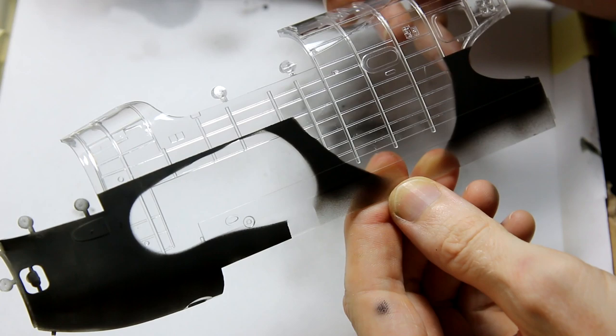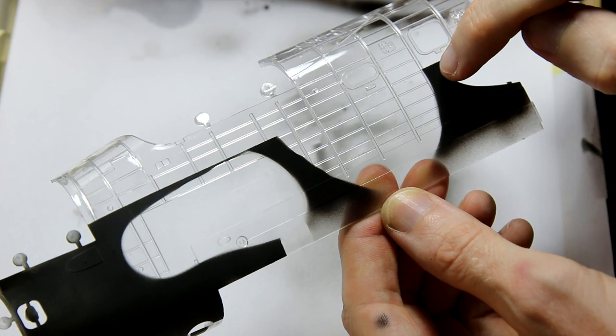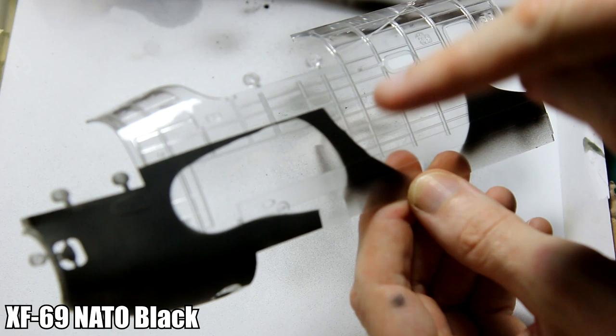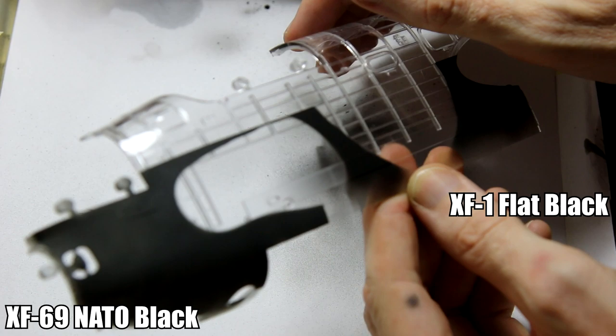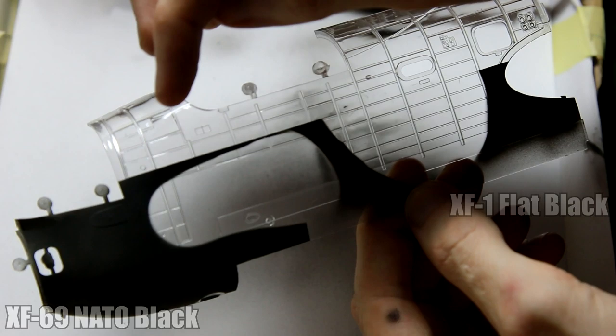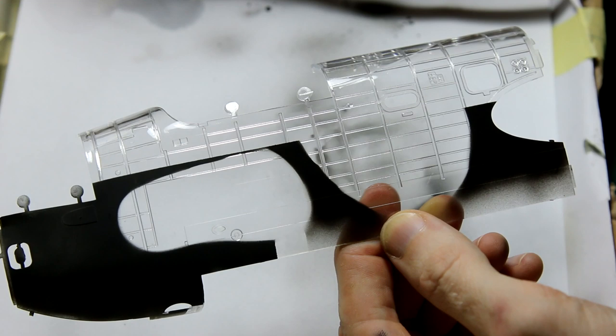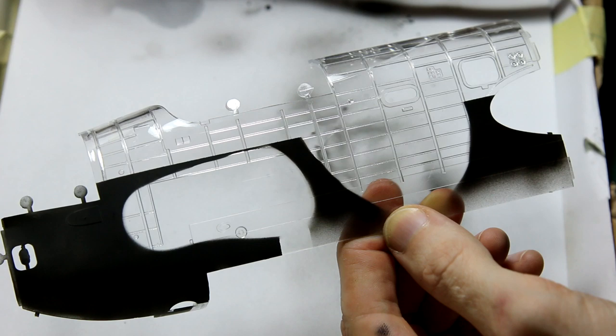So here is the result of a quick test, and you can see the masking has come out quite nicely. One thing you can't tell so well on the video is that the nose of the aircraft here on the left has been painted in XF-69 NATO black, and the section on the right has been painted in XF-1 black. And black looks a lot better to me than the NATO black. At first I thought I'd go for NATO black because of the scale effect, but it actually seems that it is too light if it's NATO black on its own.